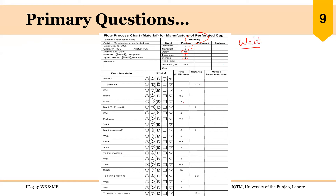Because delay and storage are both examples of waiting, we can question them. Another thing is transportation — we have mentioned the distance traveled by the part, so we can critically analyze whether we can improve the layout to reduce this distance and overall flow time. Similarly, we can ask about the time for each delay: if one delay takes two minutes, another three, another five, we can sum up the total delay time and find ways to reduce it or ideally eliminate the waiting entirely.